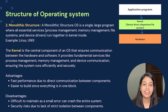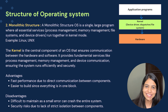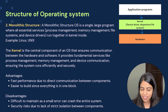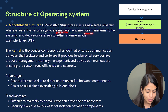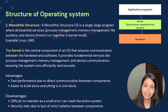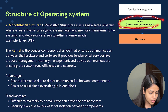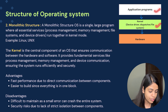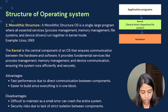The second one is monolithic structure, which is far better than simple structure. A monolithic operating system is a single large program where all essential services like process management, memory management, file system, and device drivers run together in kernel mode. Application programs contact the kernel, and then the kernel contacts the hardware for all purposes. Examples are Linux and Unix.